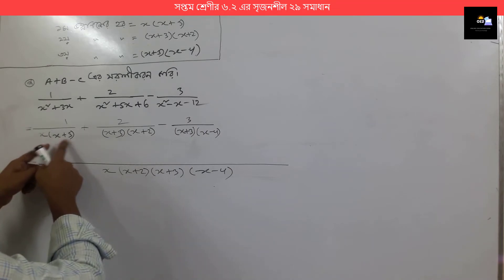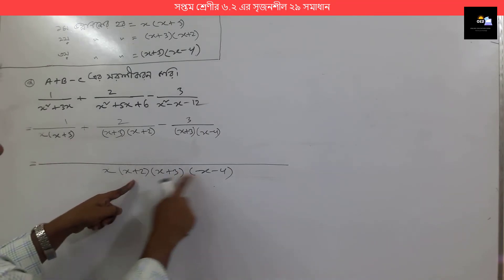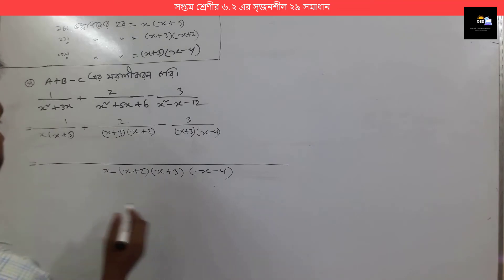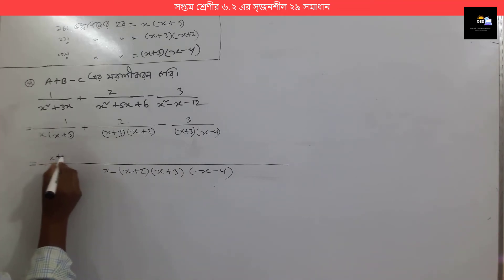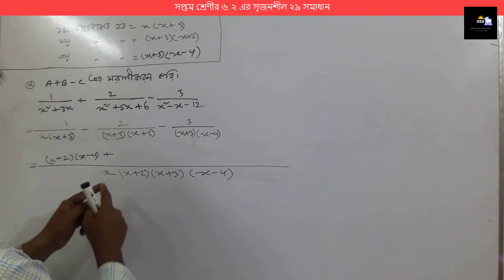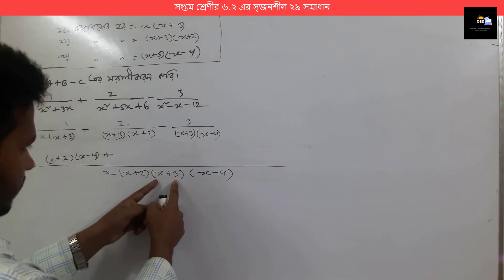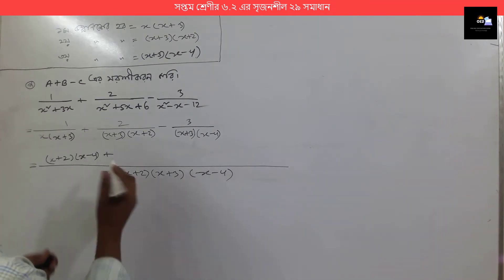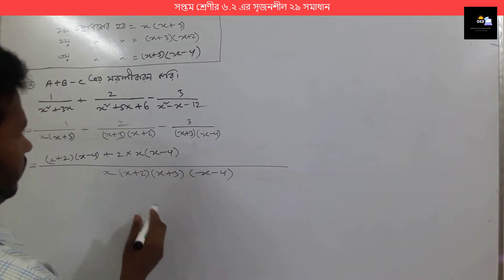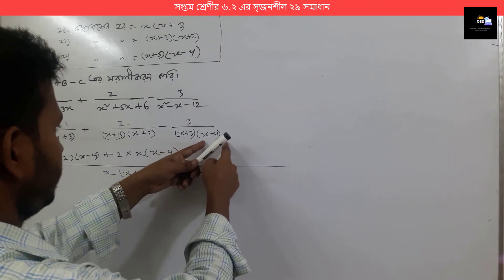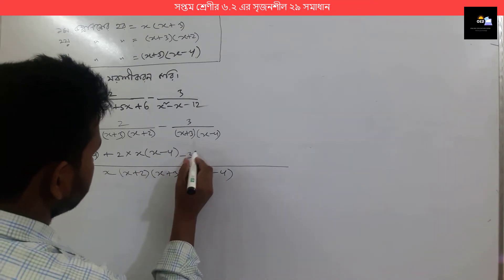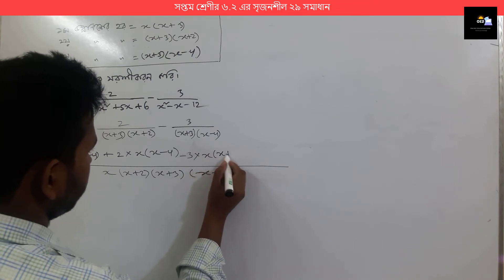Check in there: x into x plus 3, then x plus 2, x minus 4. So x plus 2, x plus 4 is 1, so we call it 1 — x plus 2 into x minus 4. Here we have a plus. Now x plus 3 and x plus 2, so x minus 4. So 2 into x minus 4. Now x plus 3 and x minus 4, so x into x plus 2. So 3 is minus 3 into x into x plus 2.